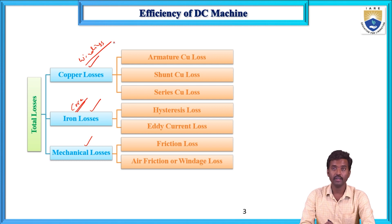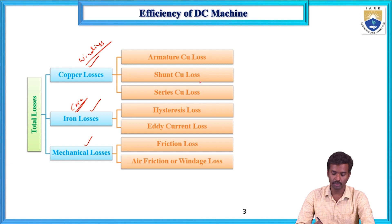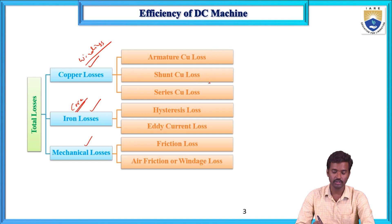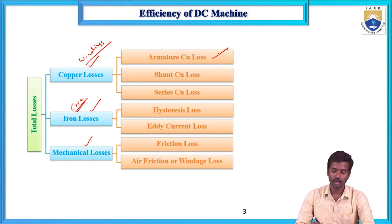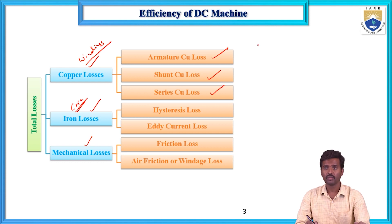The windings in a DC machine are armature winding and field winding. In a shunt machine, there is a shunt field winding; in a series machine, there is a series field winding. Due to the resistance of these windings and the current flowing through them, a loss occurs known as copper loss. Armature winding gives armature copper loss, shunt field winding gives shunt copper loss, and series field winding gives series copper loss.